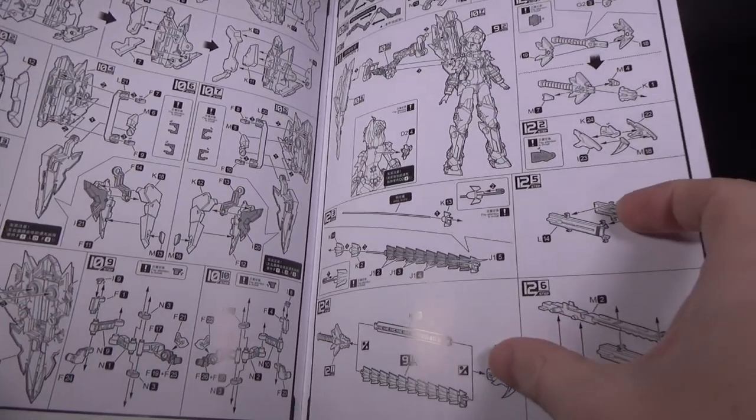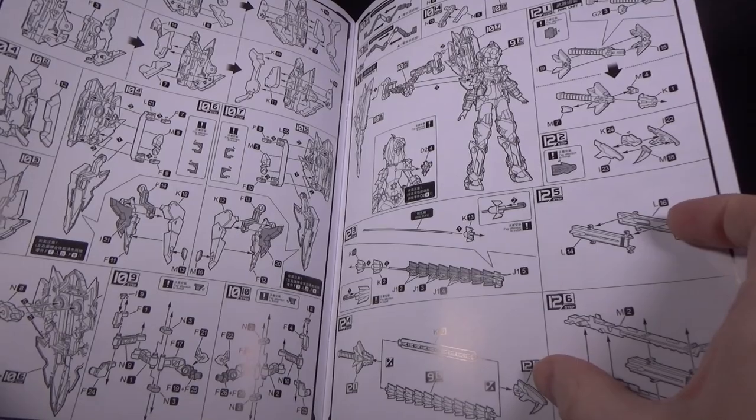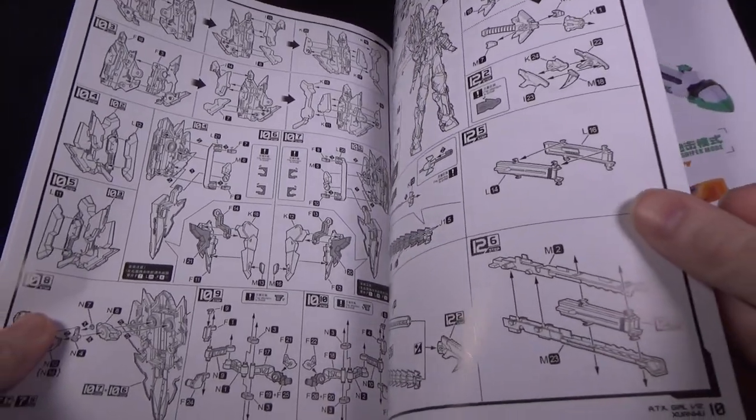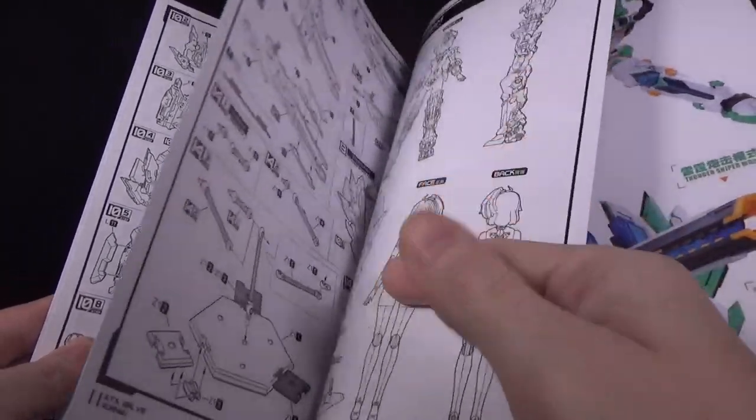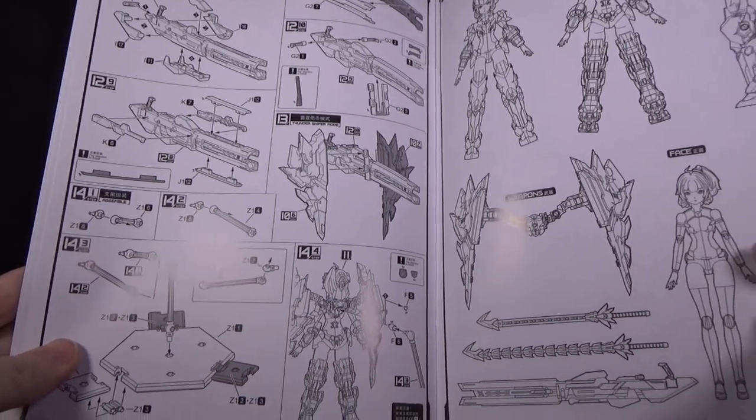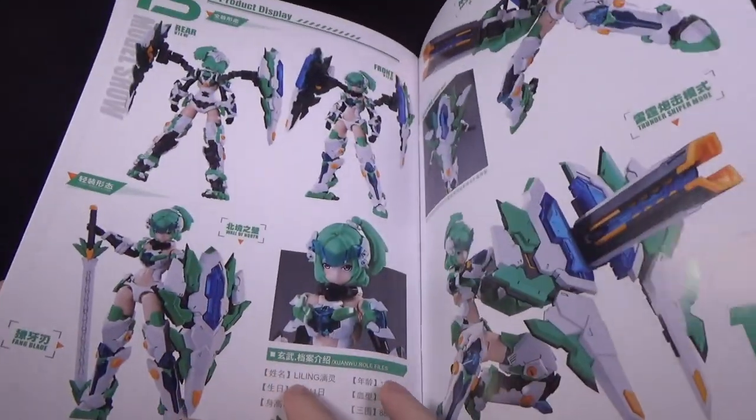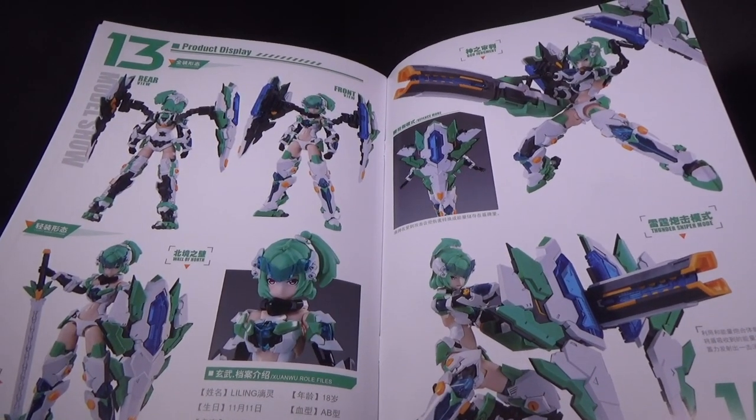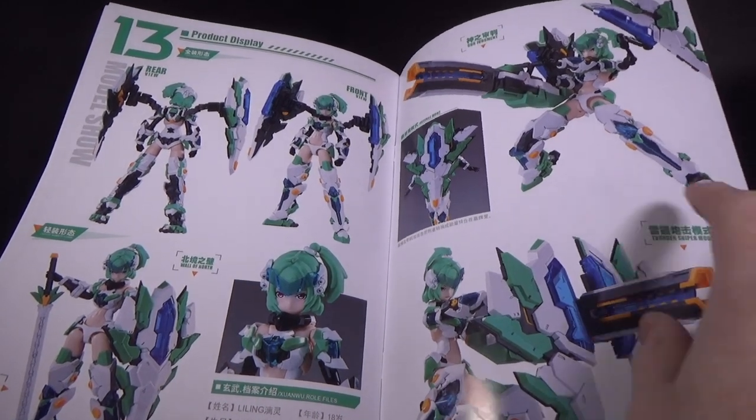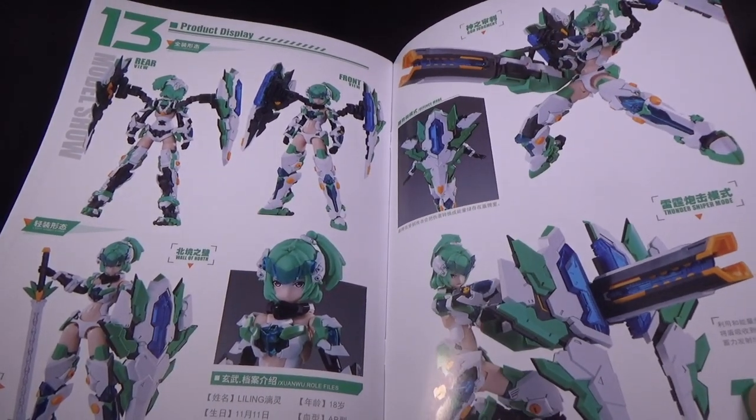And she has like a whipsword, kind of like Poison Ivy from Soul Calibur, and then the rifle. It has some pretty nice pictures. Definitely like the Dynamis, but they can actually combine on the shoulders.